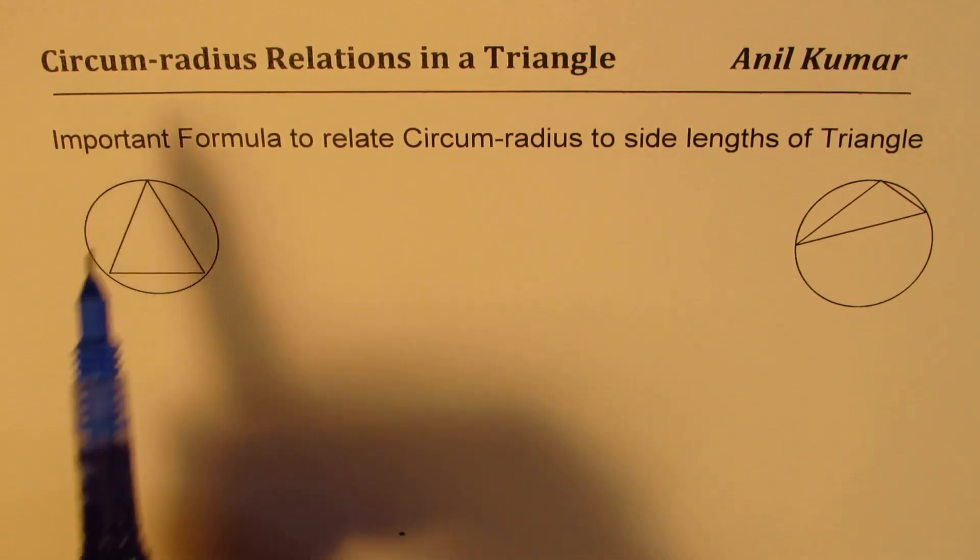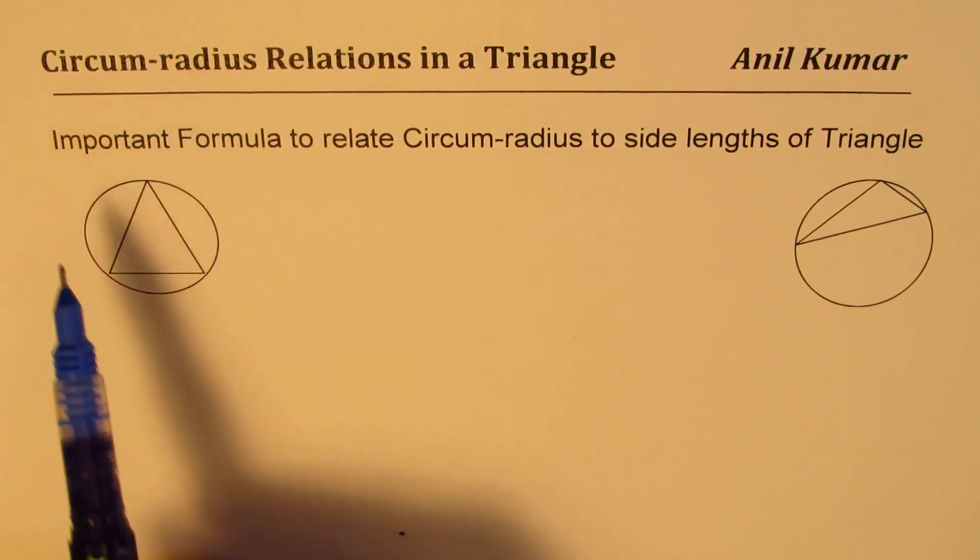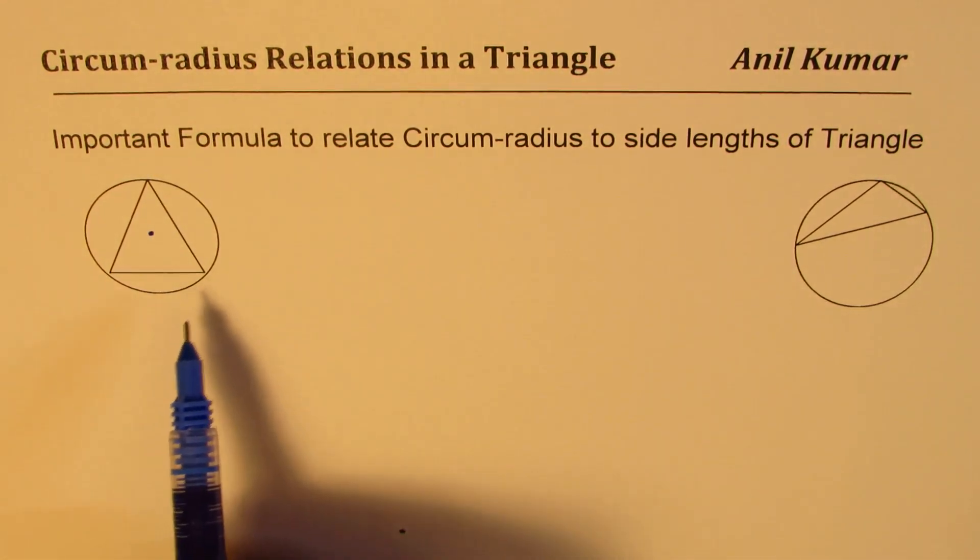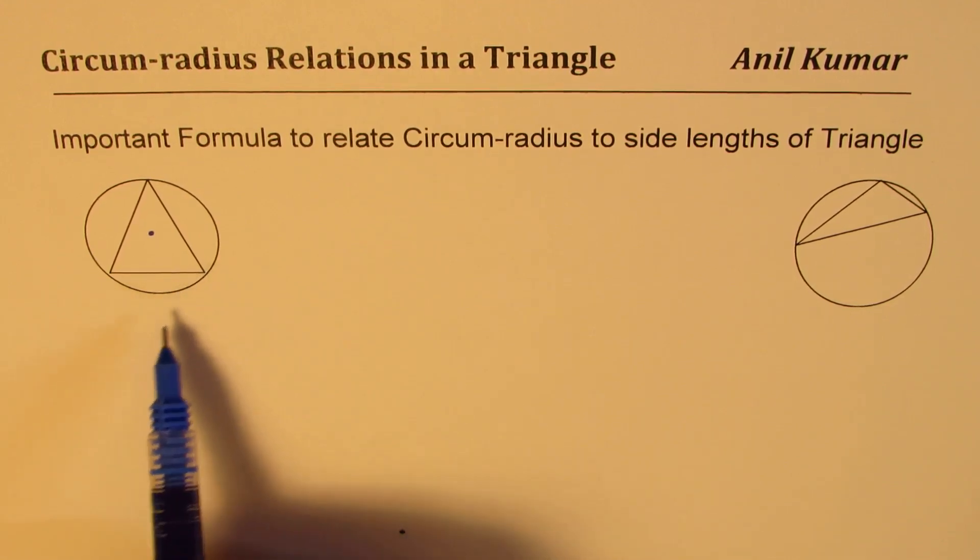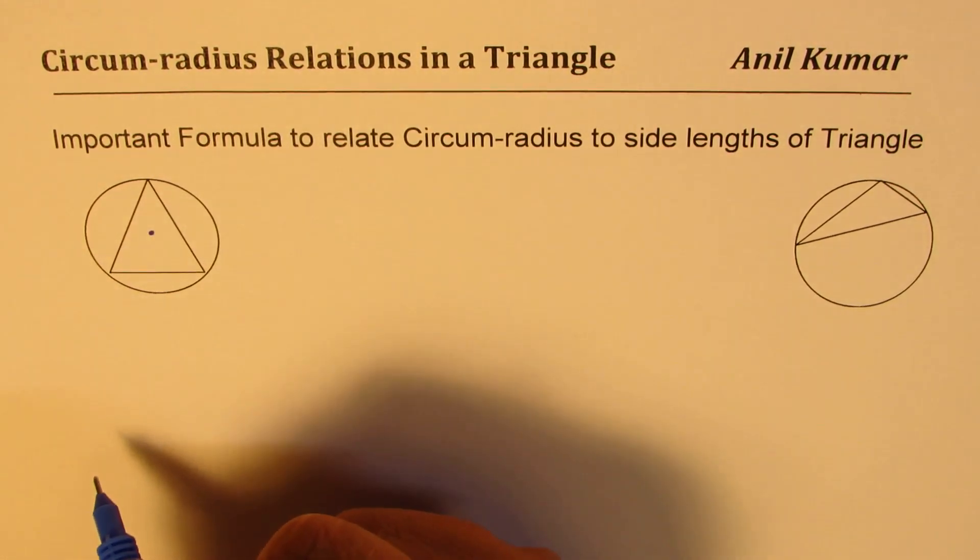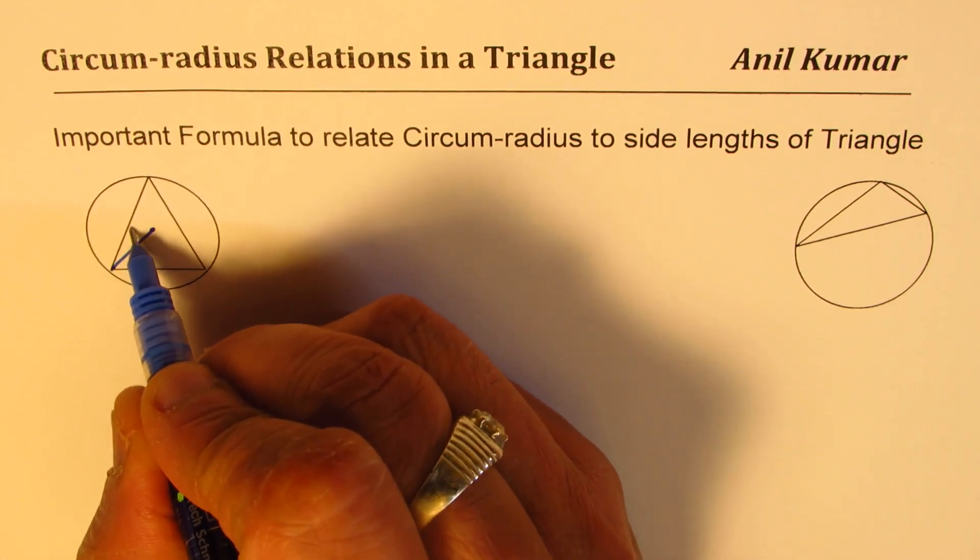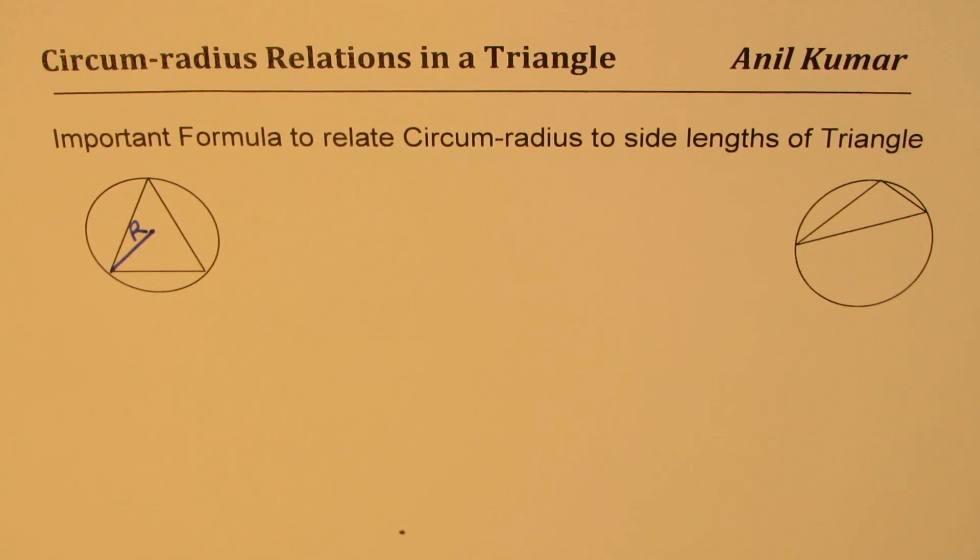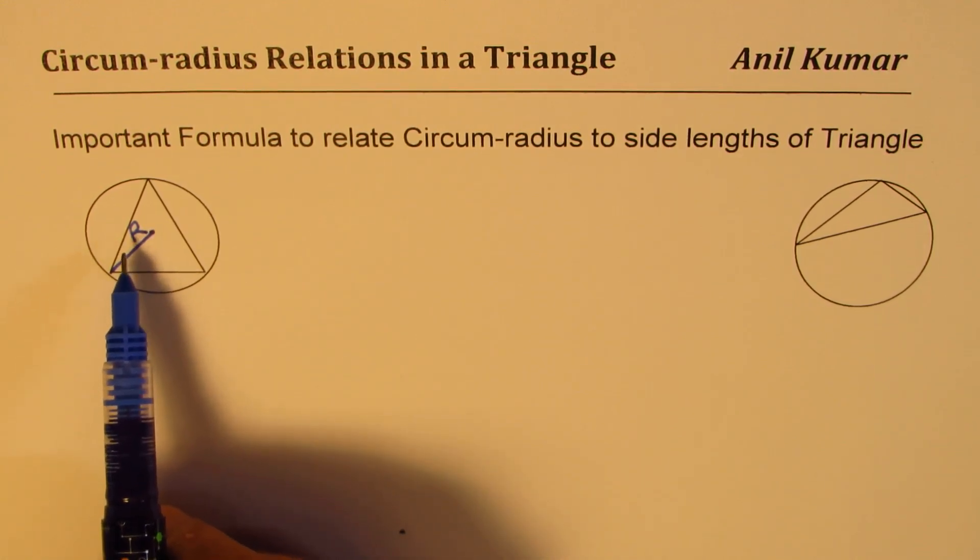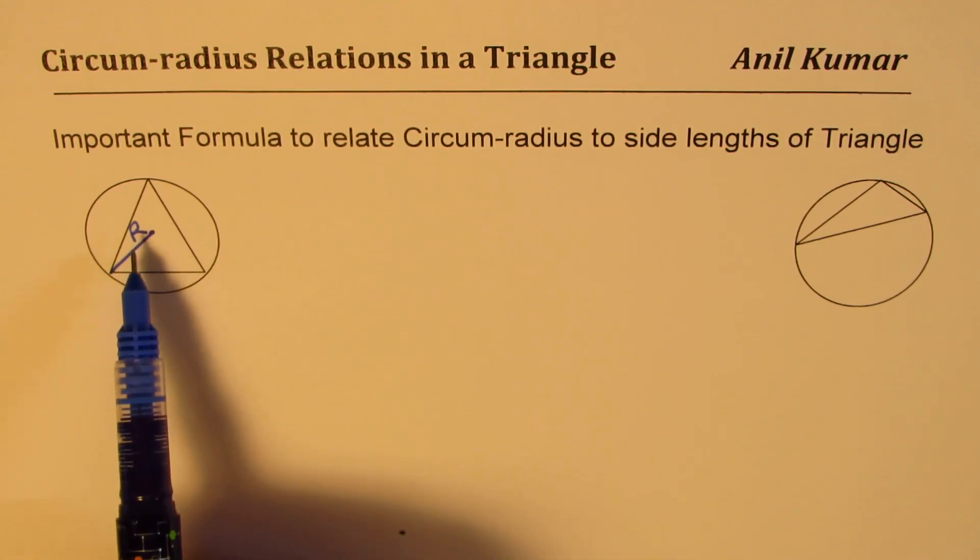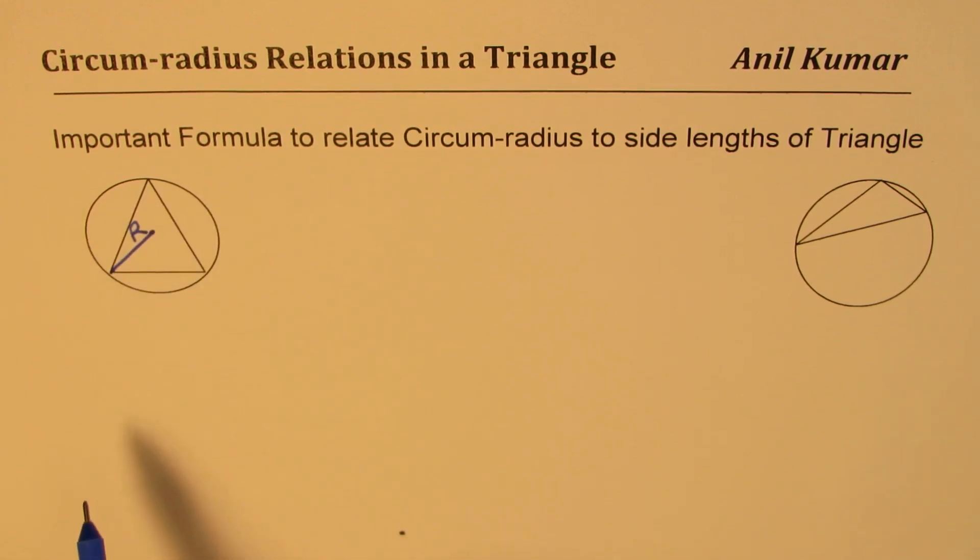These formulas are very helpful in solving many complicated questions relating circles and triangles. When we say circum-radius, we mean the radius of a circle in which we could inscribe a triangle, or a circle is circumscribed on a triangle. We need to find a relation of this radius capital R with these sides of the triangle.